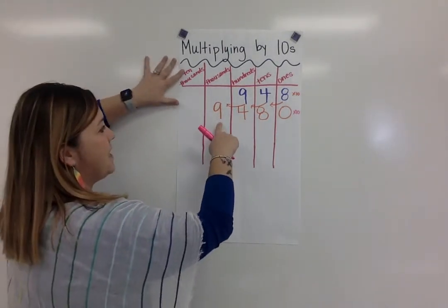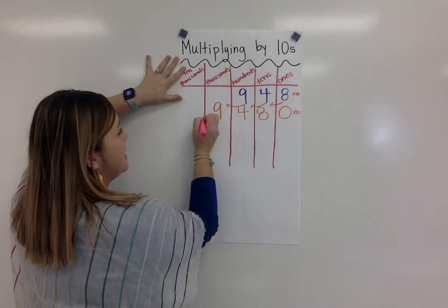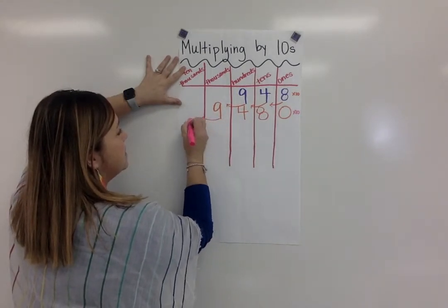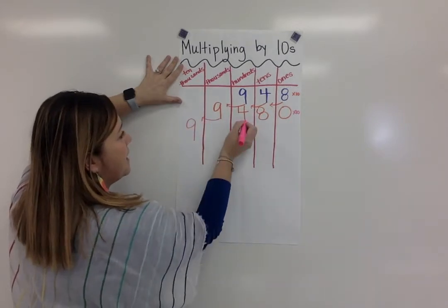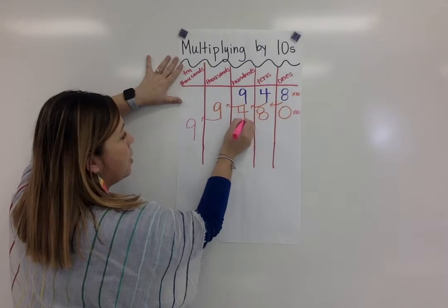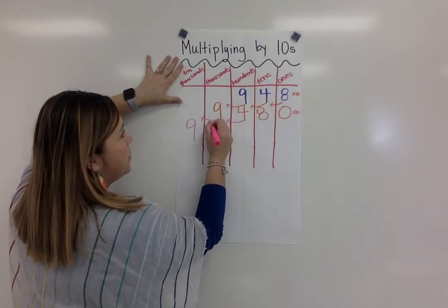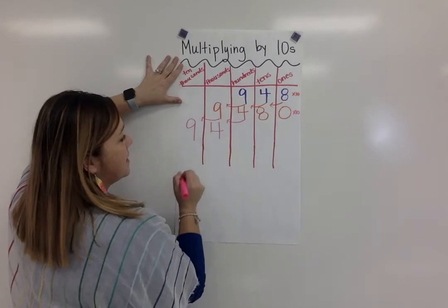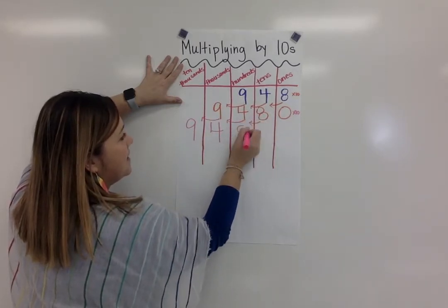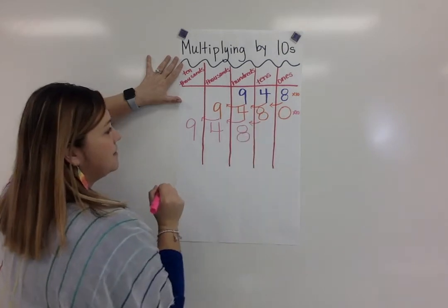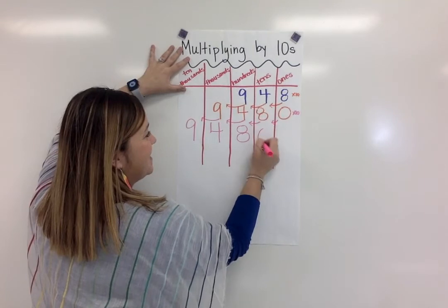So now I'm going to take my 9,000 and multiply it by 10 — it becomes 90,000. If I multiply 400 by 10, it now has a value of 4,000. And 80 times 10 is 800. Zero times 10 is still 0.